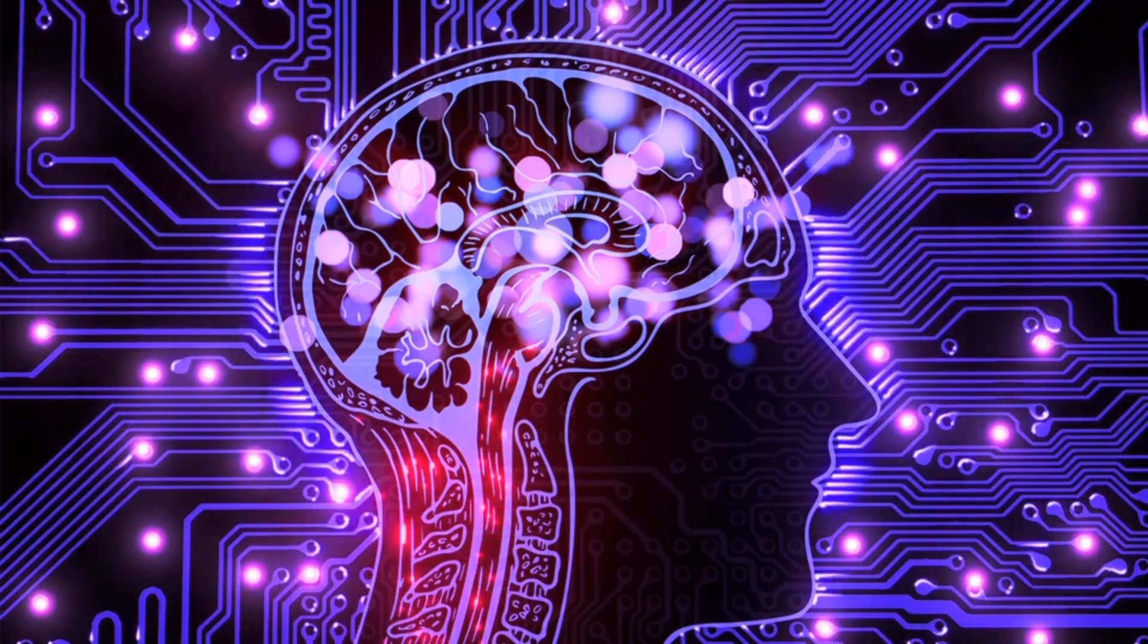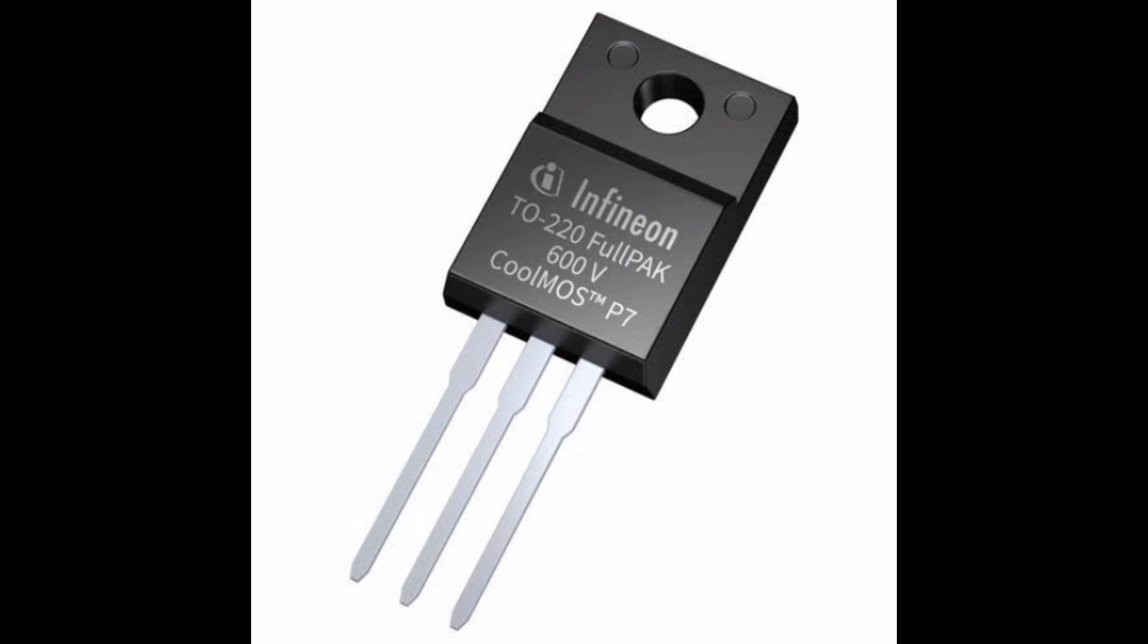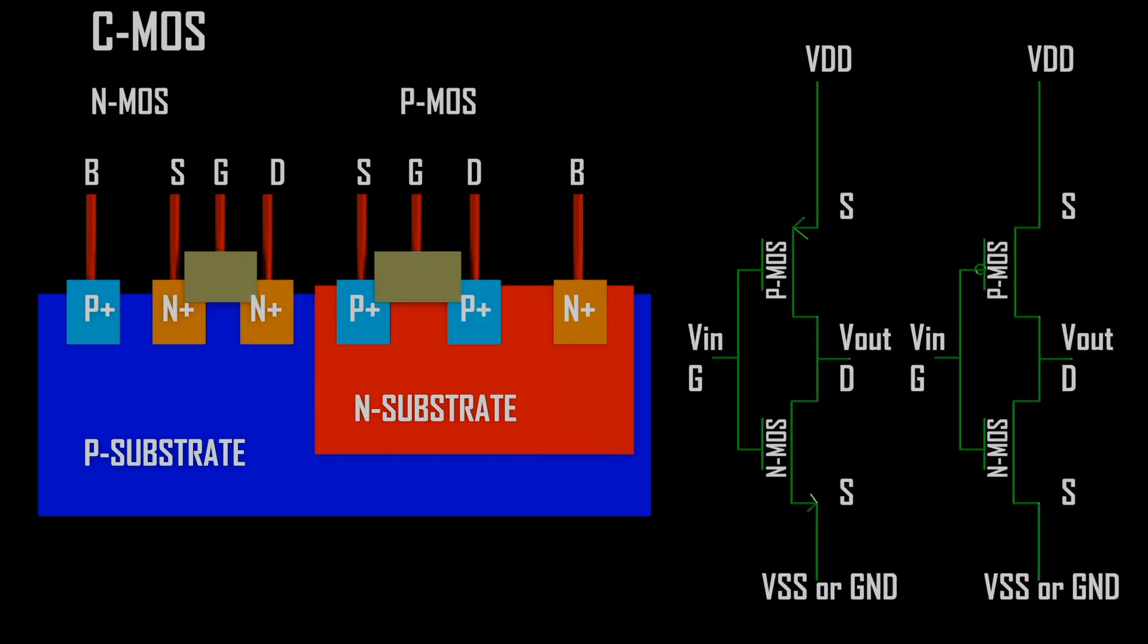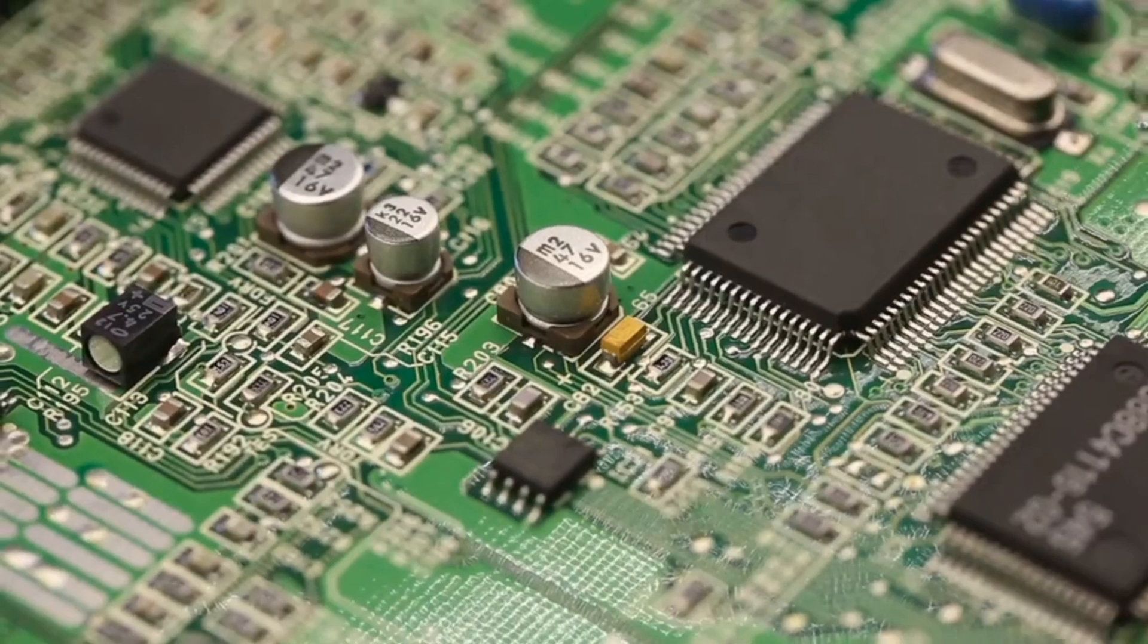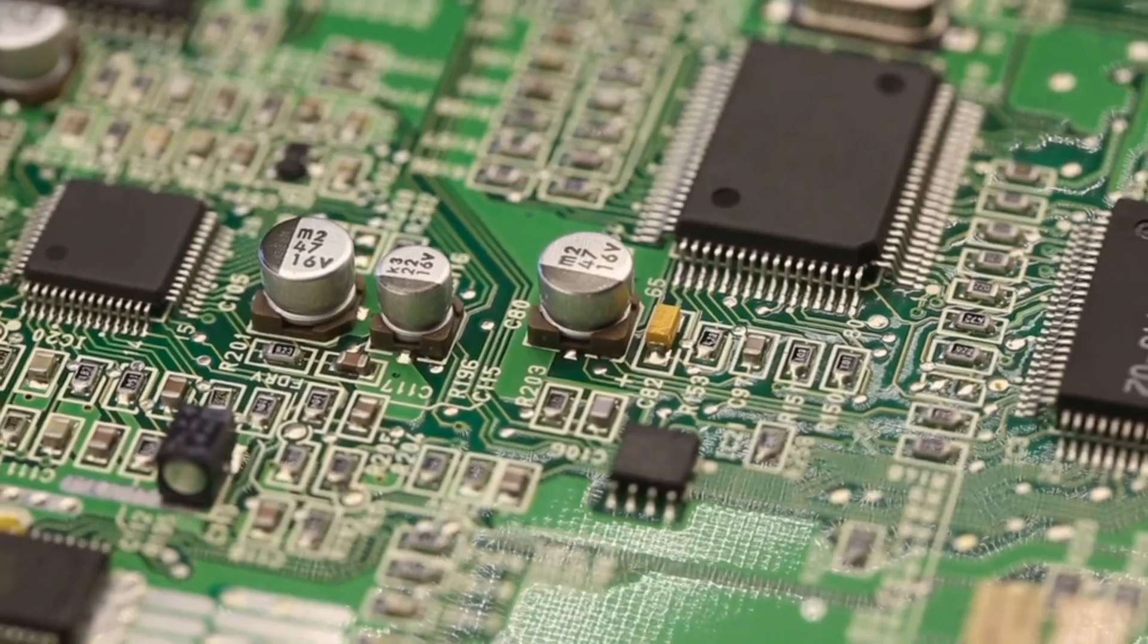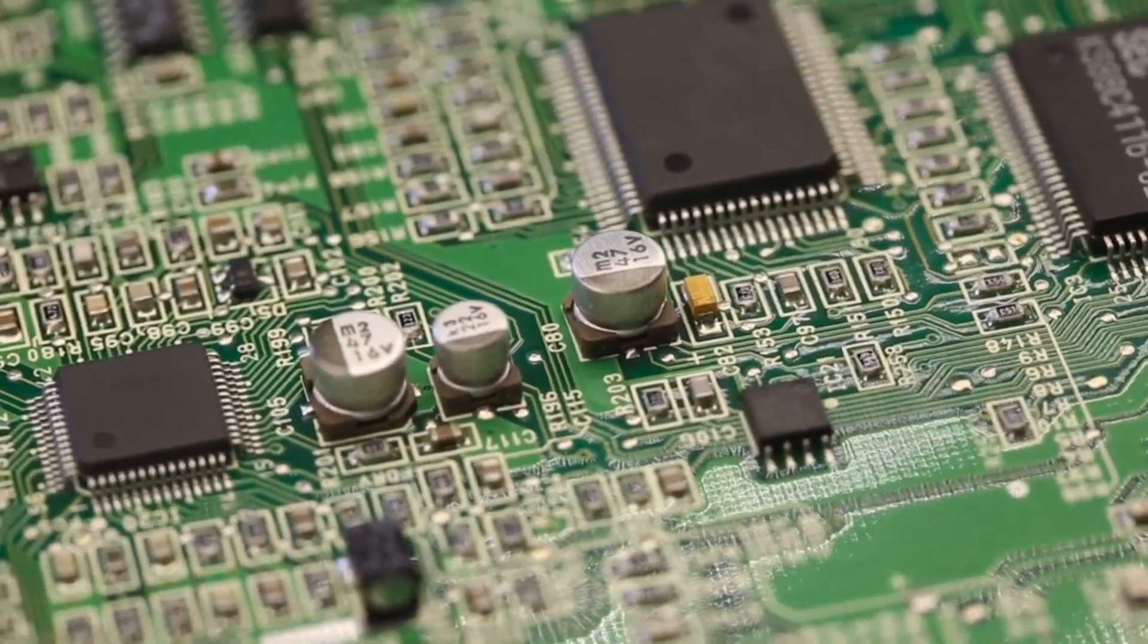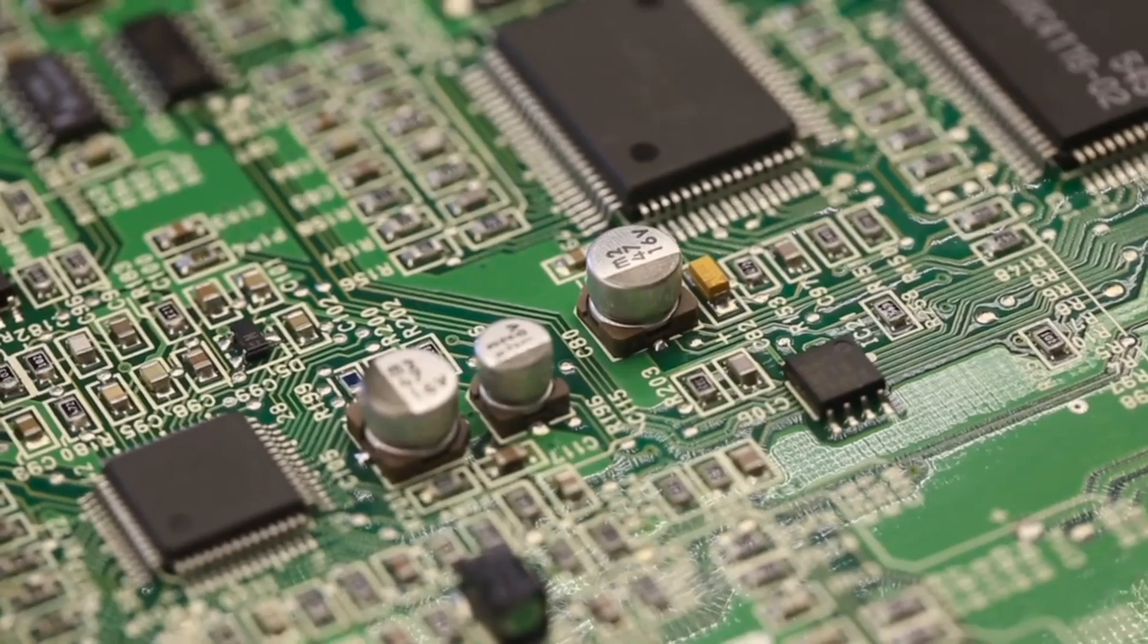Metal Oxide Semiconductor Field Effect Transistors (MOSFET) and Complementary Metal Oxide Semiconductor (CMOS) technology emerged in the 1960s and 1970s. These advancements allowed for the fabrication of smaller, more energy-efficient transistors, laying the groundwork for modern digital electronics.